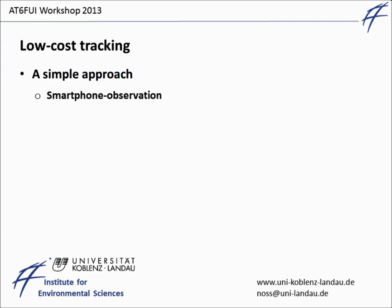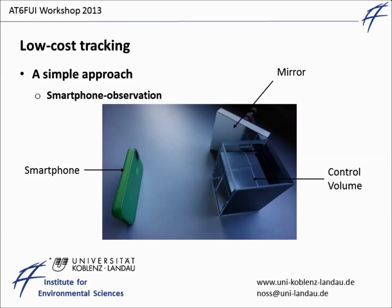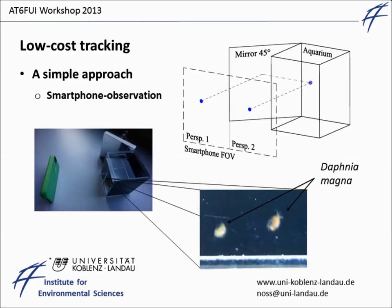An example for a simple approach would be a setup using a smartphone with a camera, a mirror, and a rectangular or cubic test vessel or control volume containing the test organism. Such a simple setup would already be sufficient to observe sizes and animal pathways three-dimensionally. The trick is only to subdivide the camera field of view into two perspectives: one showing the front view and the other showing the mirror side view. This would also ease the simultaneous triggering of both image observations.